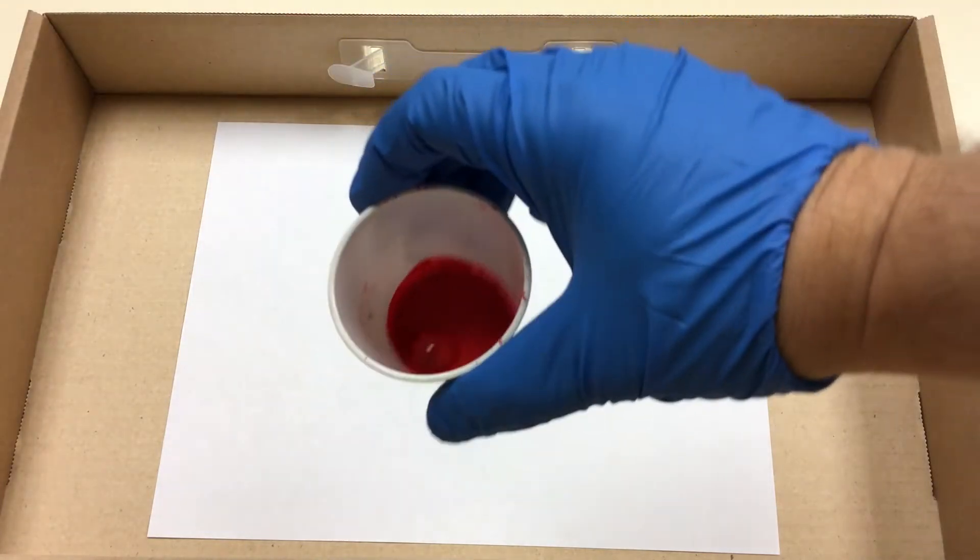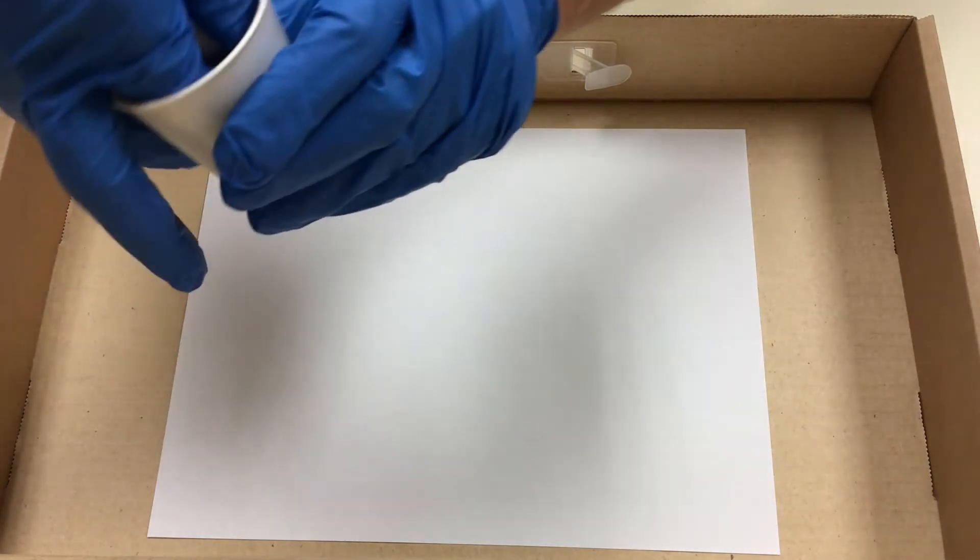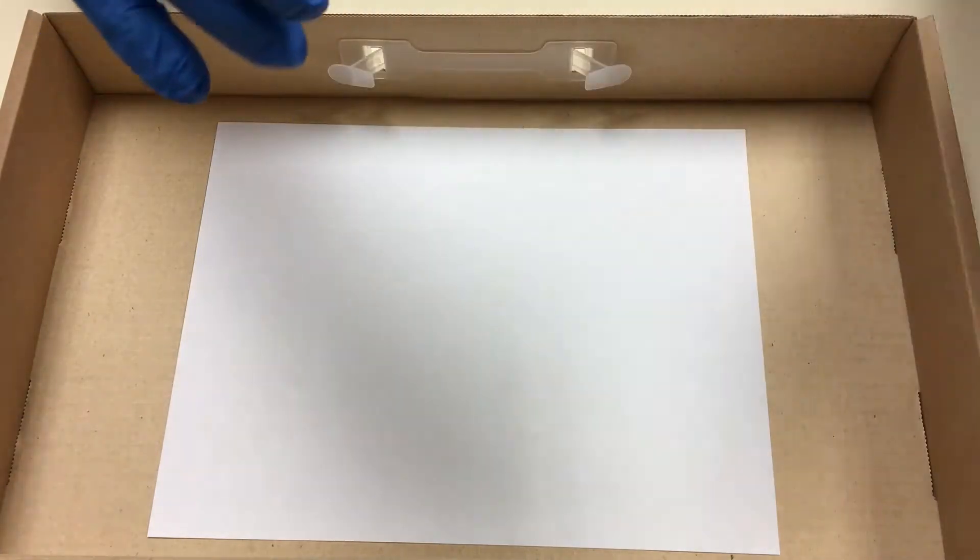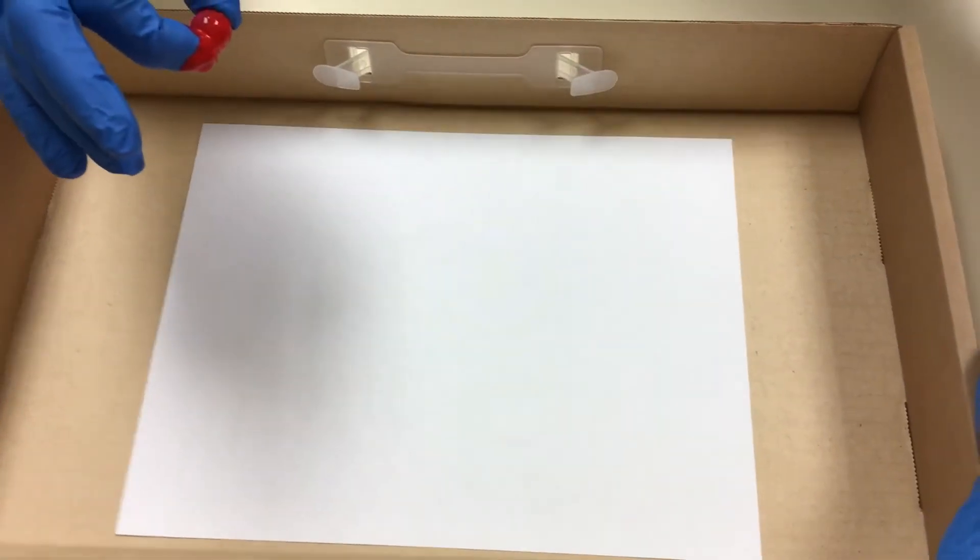You take your marble, drop it in there, roll it around a little bit, and what you're going to do is get your marble out of there and just drop it down in the box and roll it around. Just roll it around until the paint wears off.